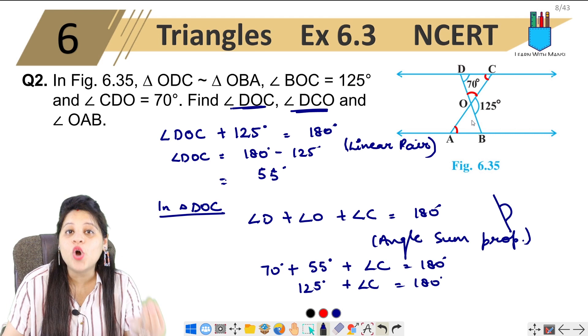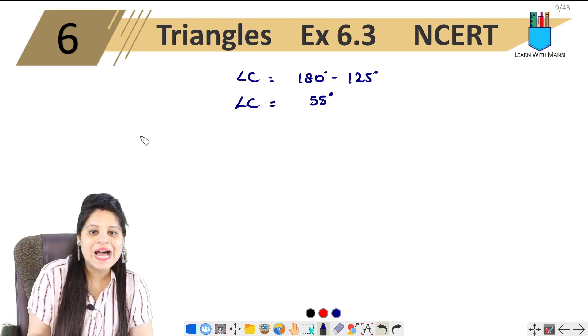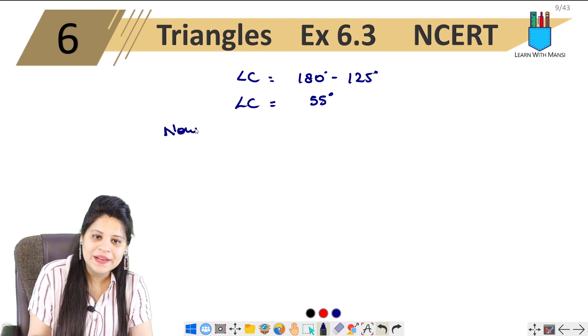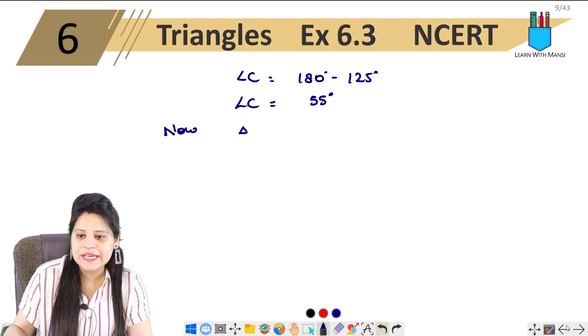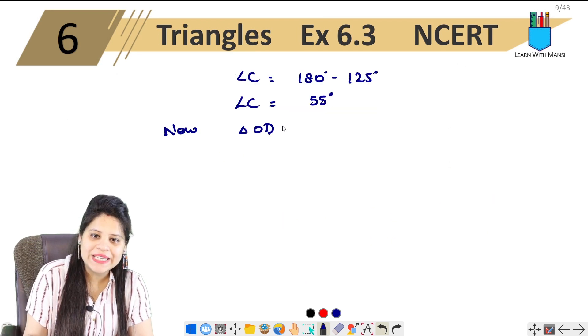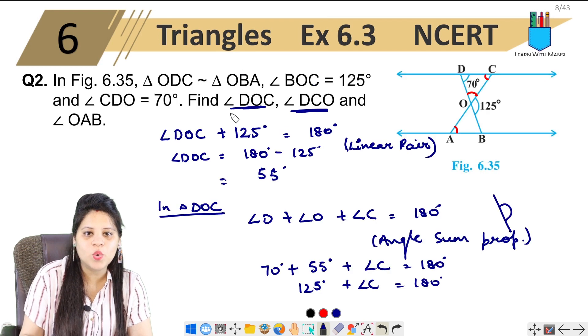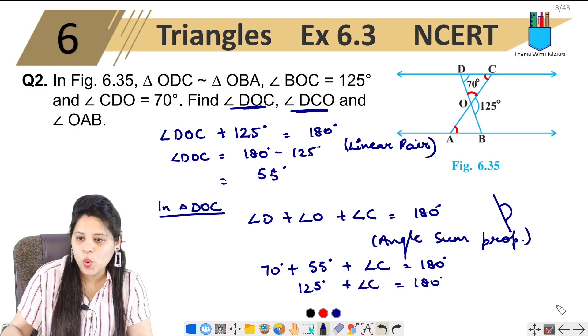So if triangles are similar, corresponding angles will be equal. Which triangles do we have? Triangle ODC is similar to triangle OBA.